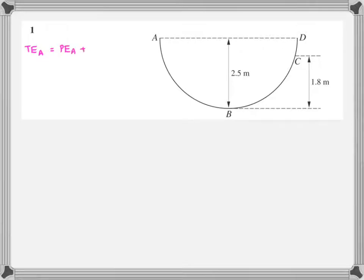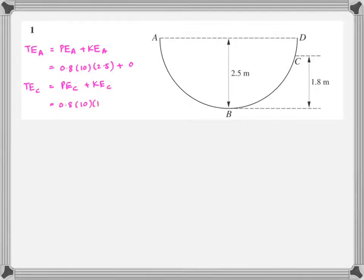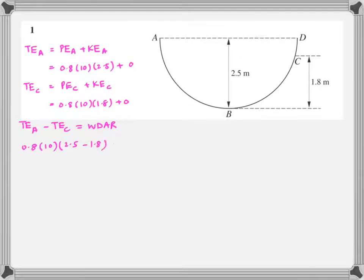Total energy at A: kinetic at A is zero, potential at A is mgh. Total energy at C: kinetic at C is zero as well. The difference between the two total energies is the work done against resistance. Take common and simplify — you find the work done against resistance.